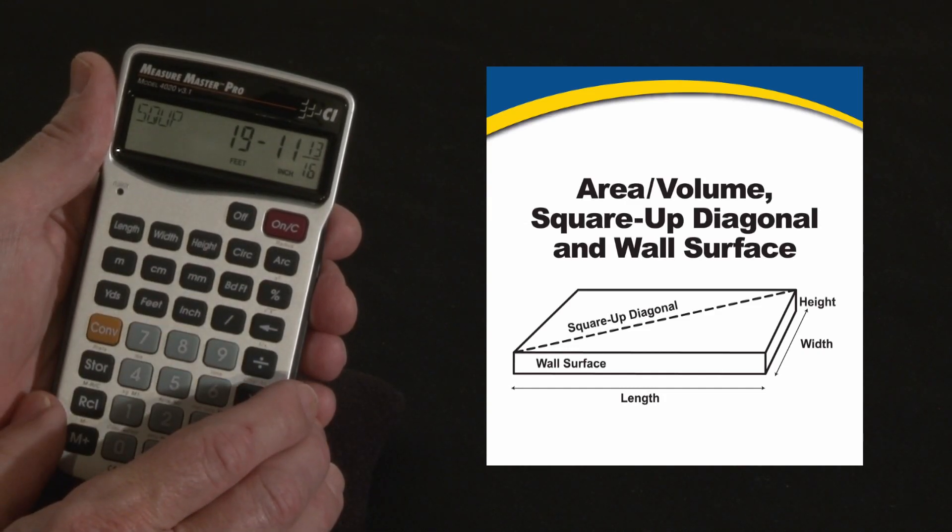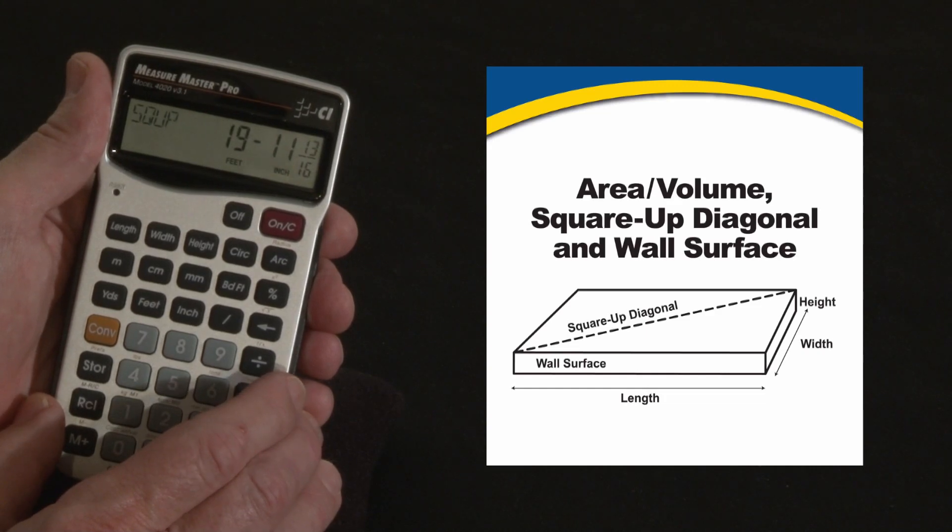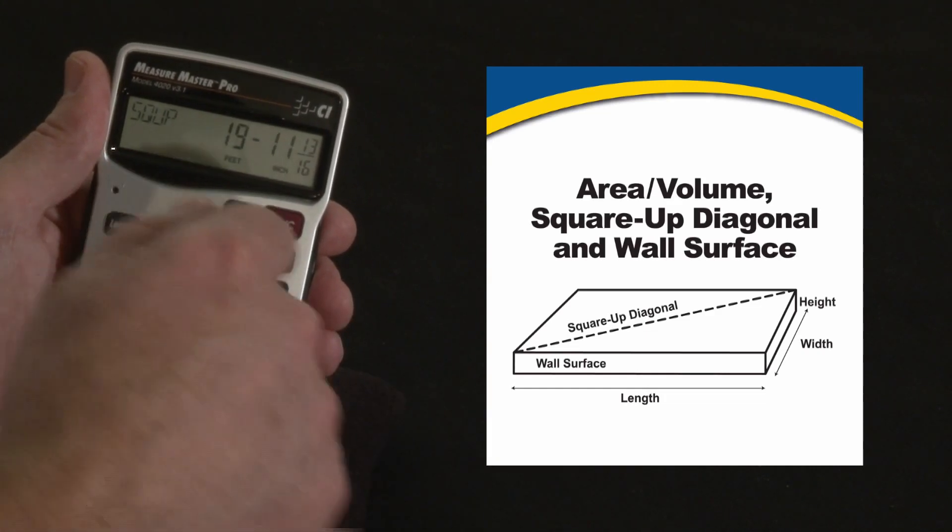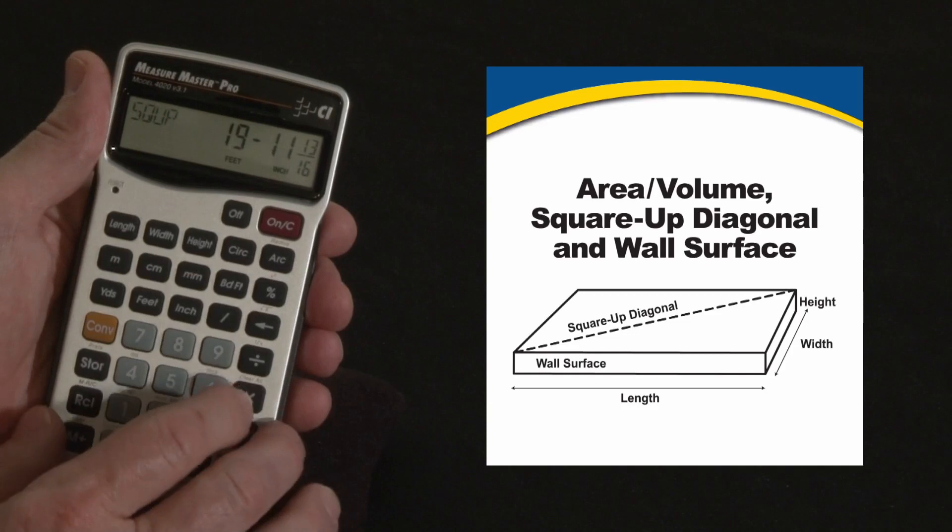The square up diagonals. So if we're setting forms or framing this in such a way we want it to be straight with 90 degree corners, we're going to pull a tape diagonals, make sure it's square, that's the number you're looking for.